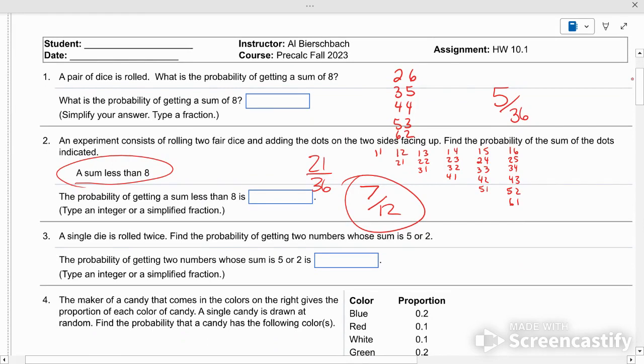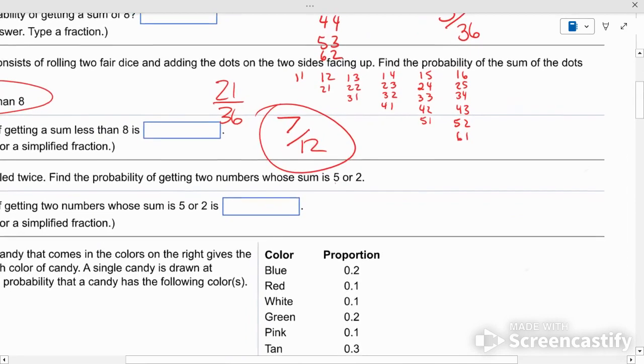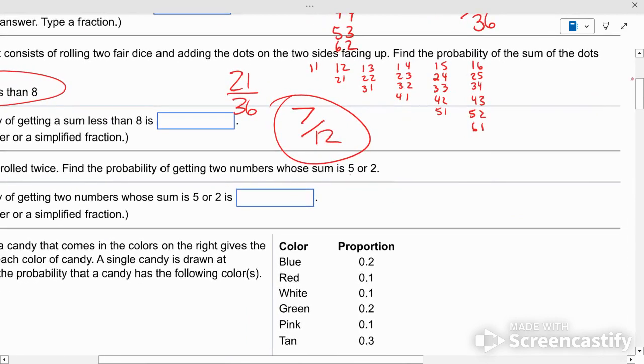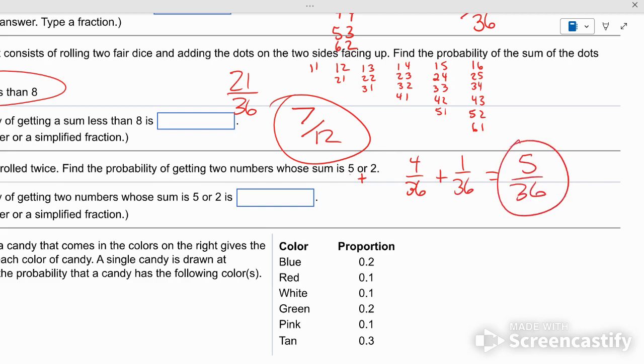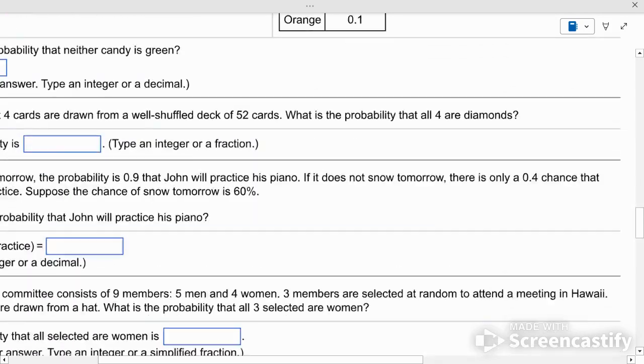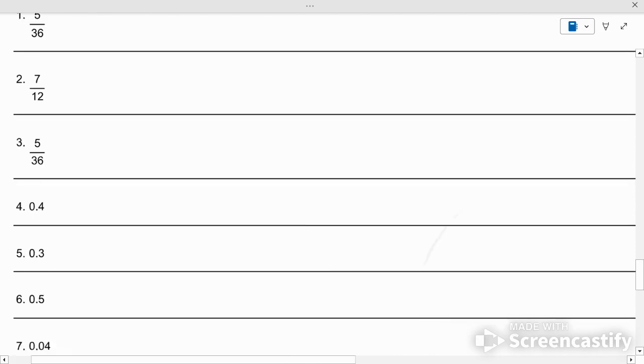A single die is rolled twice. Find the probability of getting two numbers whose sum is 5 or 2. Now a single die is rolled twice. Find the probability of getting a 5 or a 2. When you see OR, you add the two probabilities together. If you see the word AND, you multiply them together. OR is addition. AND is multiplication. So what's the probability of getting two numbers whose sum is 5? Well, you've got a 4 out of 36 chance of getting a 5. Chances of getting a 2 are a 1 out of 36. So you add them together and get 5 out of 36. That's the probability of getting a 5 or a 2 when you roll 2 die.